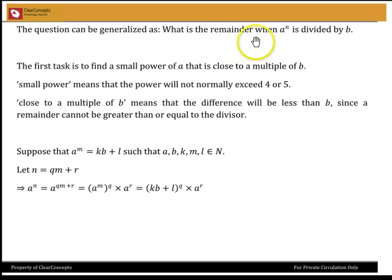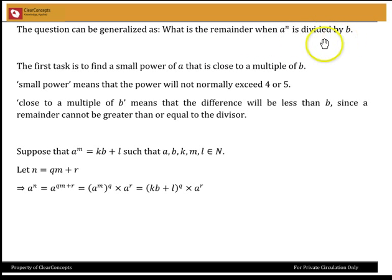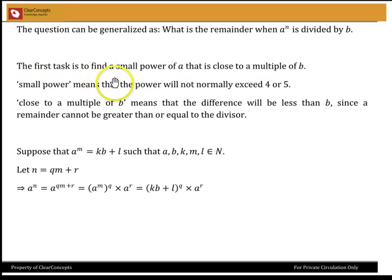What is the remainder when A to the power of N is divided by B, where A, N, and B are some natural numbers? The first task we have to undertake is to find a small power of A that is close to some multiple of B.